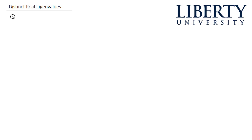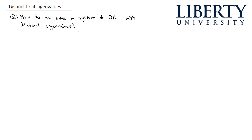Now that we've taken a look at some of the theory behind how we're going to be solving these systems of linear differential equations, we're going to actually start solving them. We're going to ask the question: how do we solve a system of differential equations with what we're going to call distinct eigenvalues? If you don't remember eigenvalues from linear algebra, or haven't taken it, it's important that you watch the review video provided in the learning management system, because we're going to use eigenvalues and eigenvectors heavily in the next few sections.